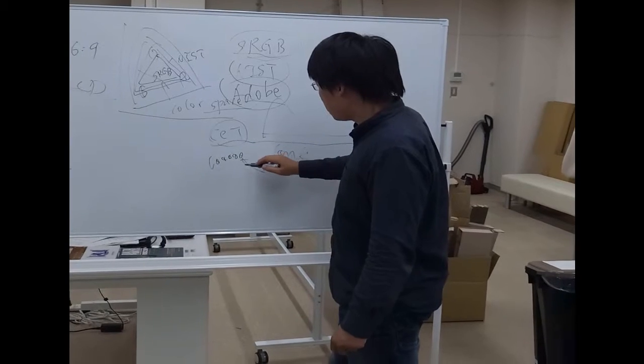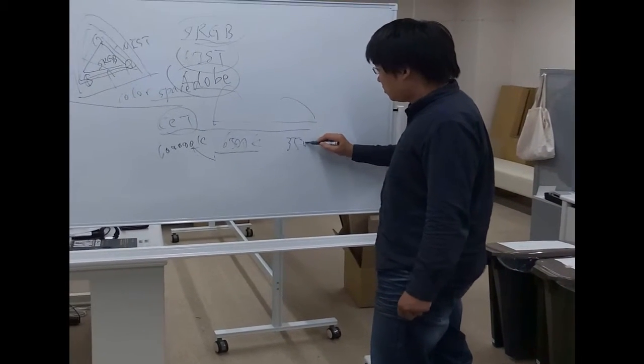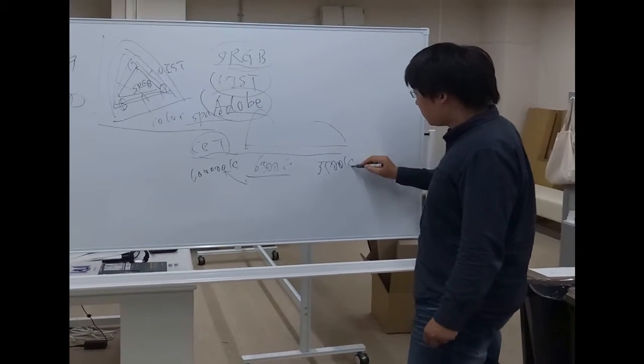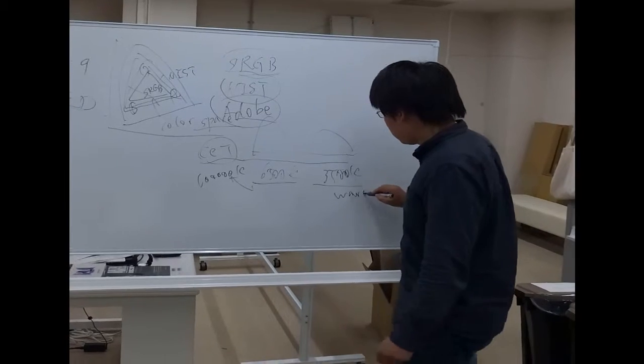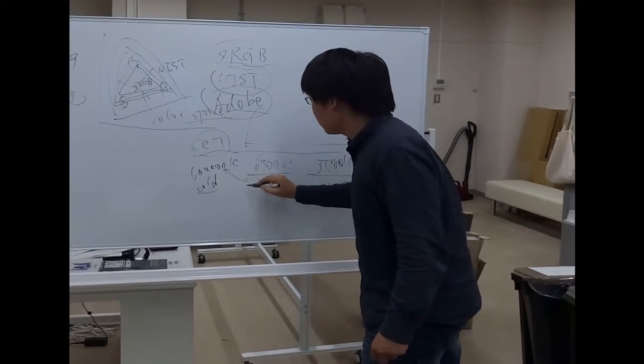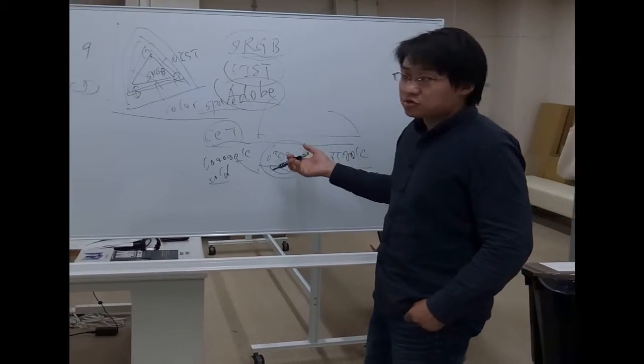Or we may have higher temperature, 10,000 Kelvin, or low temperature, 3500 Kelvin. This is warm color, this is cold color, and this is standard color, like solar.